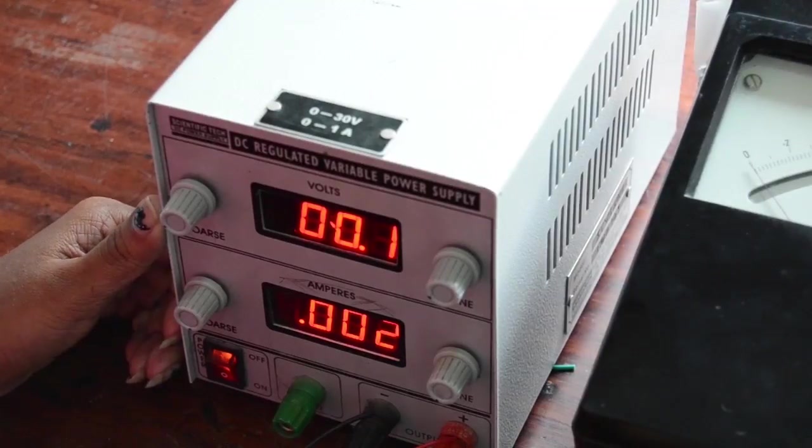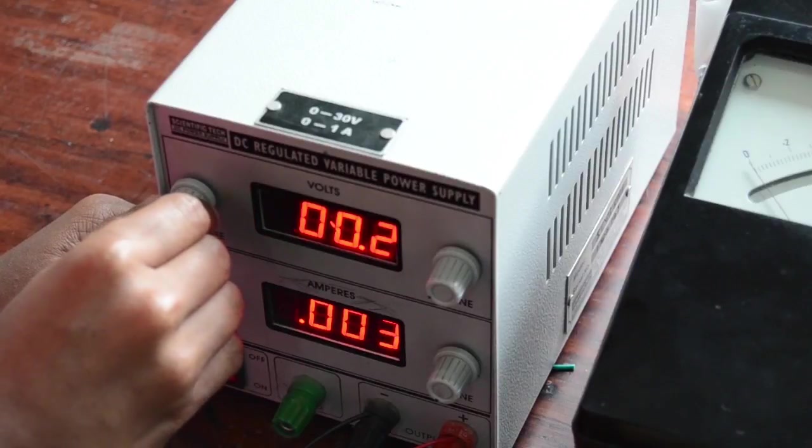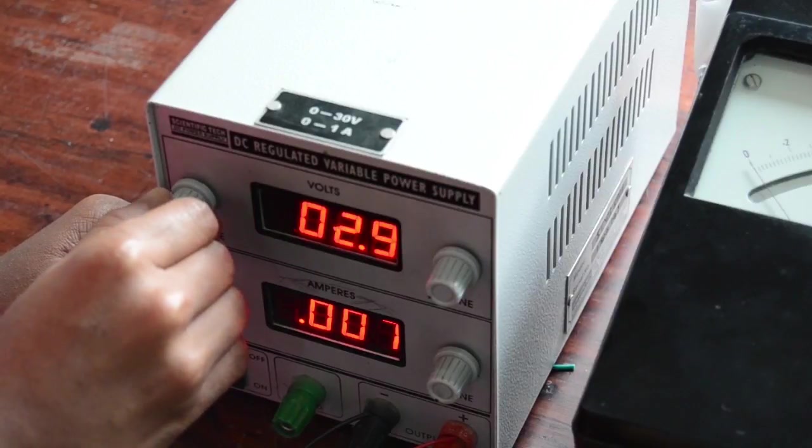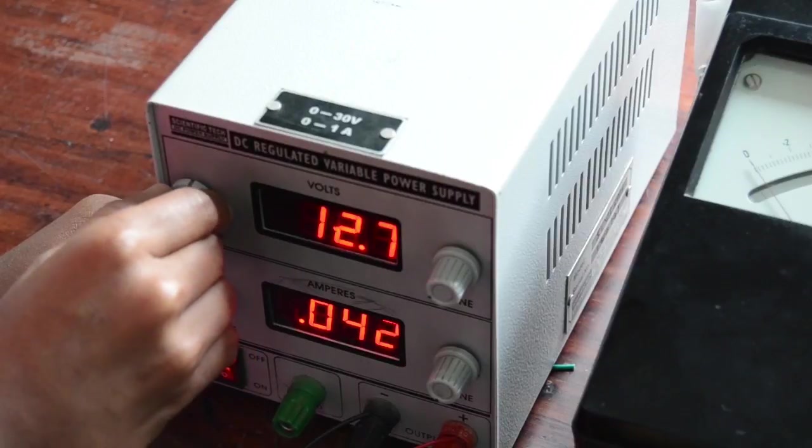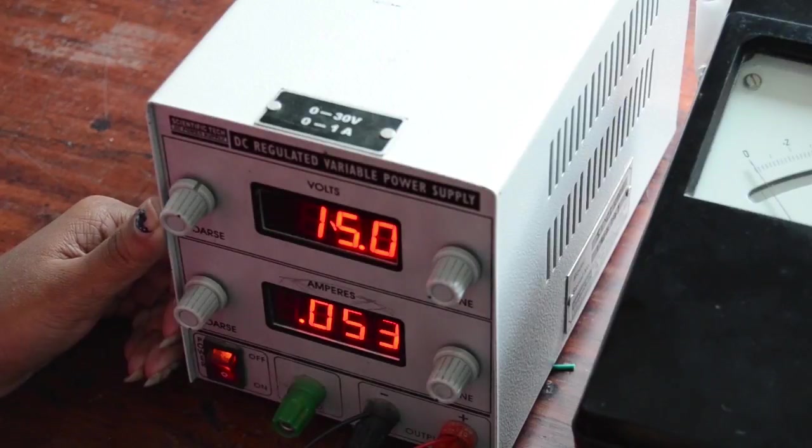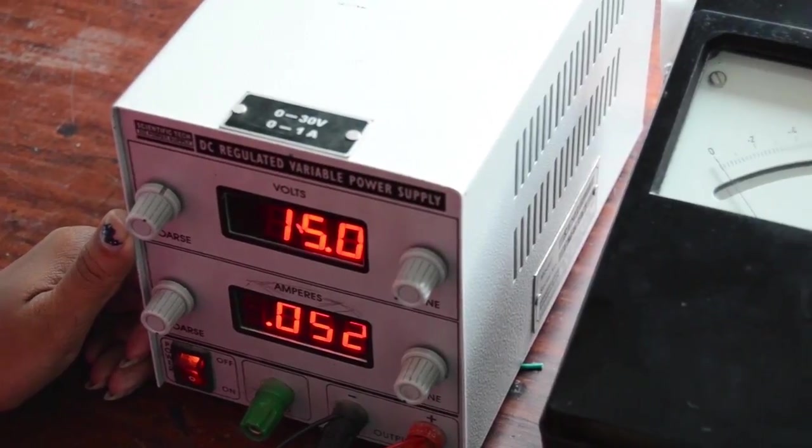We have already verified the line regulation and now let's verify the load regulation. In order to do that, we must keep the power supply at a constant voltage. So we have kept the supply constant at 15 volt, and at this point we can see that the output voltage is regulated at 10 volt.